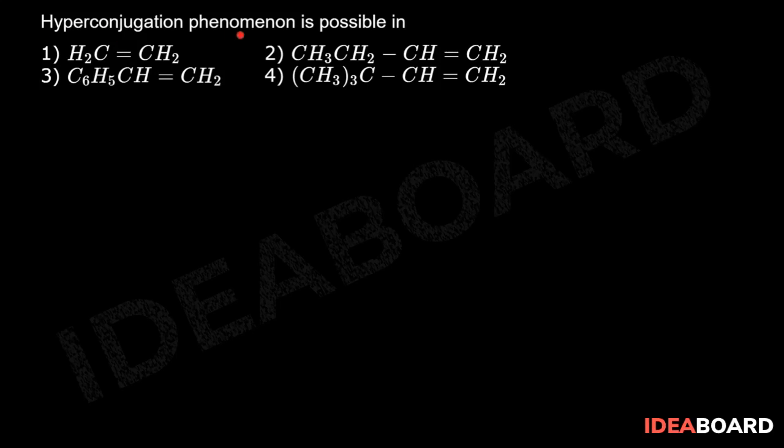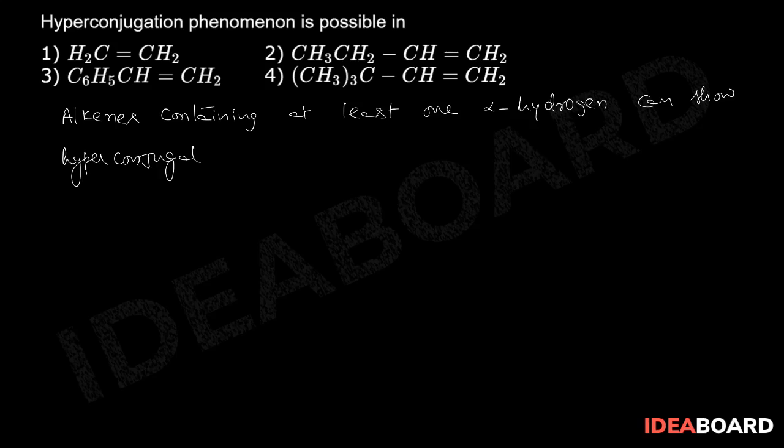Hyperconjugation phenomenon is possible in alkenes containing at least one alpha hydrogen. Alkenes can show hyperconjugation. In the first case: